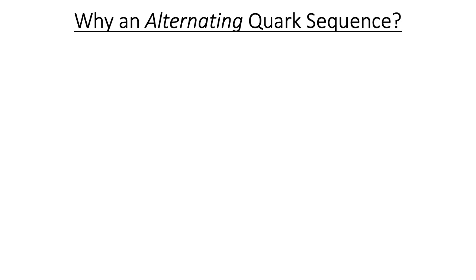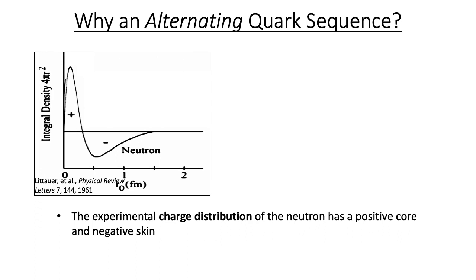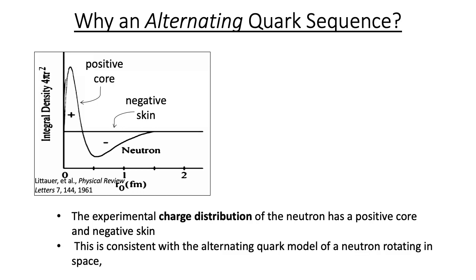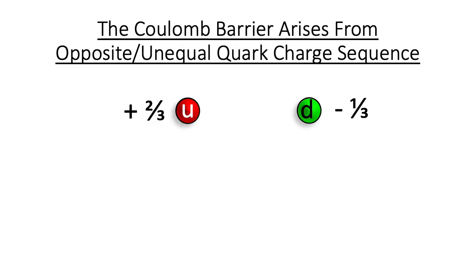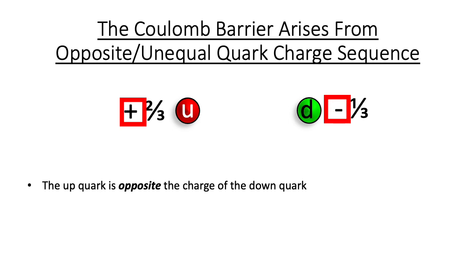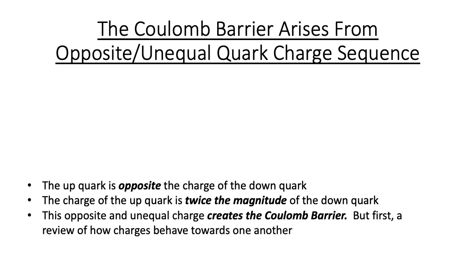We've discussed the rationale for a quark sequence, but why an alternating quark sequence? The experimental charge distribution of the neutron has a positive core and a negative skin. This is consistent with the AQM model of a neutron rotating in space, which also has a positive core and a negative skin. Additionally, the Coulomb barrier and fusion potential curve actually arise from the difference in charge between up and down quarks. The up quark is opposite in charge to the down quark, and the charge of the up quark is twice the magnitude of the down quark. To see how this opposite and unequal charge physically generates the Coulomb potential barrier, let's review some basic electrostatics.